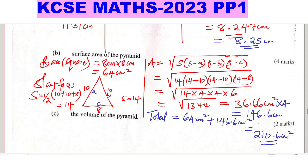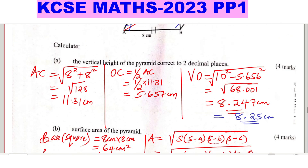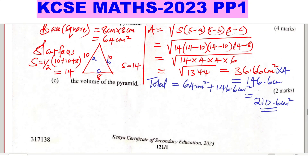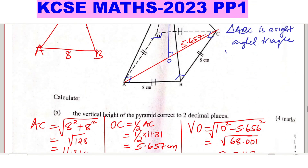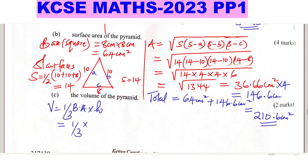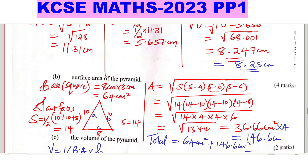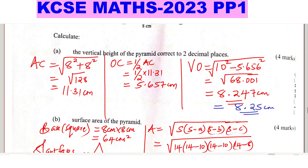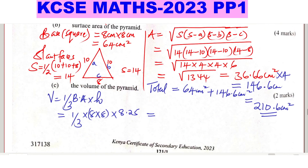Part C: the volume of the pyramid. The volume of a pyramid is given by one-third times base area times height. The base is a square measuring 8 by 8, so the base area is 64 centimeters squared. The vertical height from Part A is 8.25 centimeters. Therefore volume equals one-third times 64 times 8.25, which gives 176 centimeters cubed.